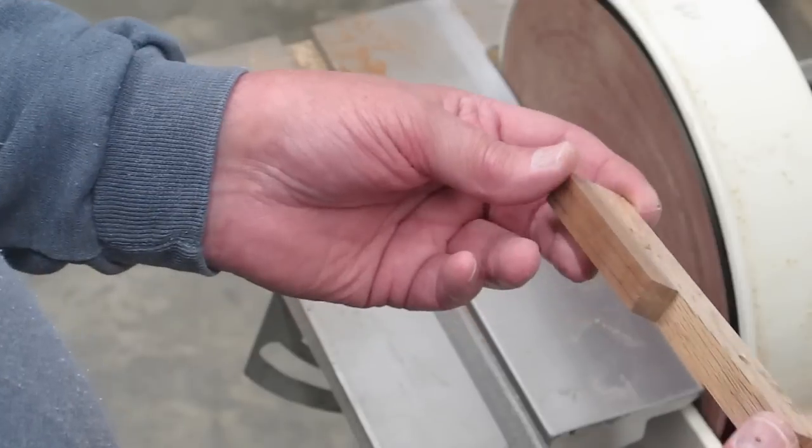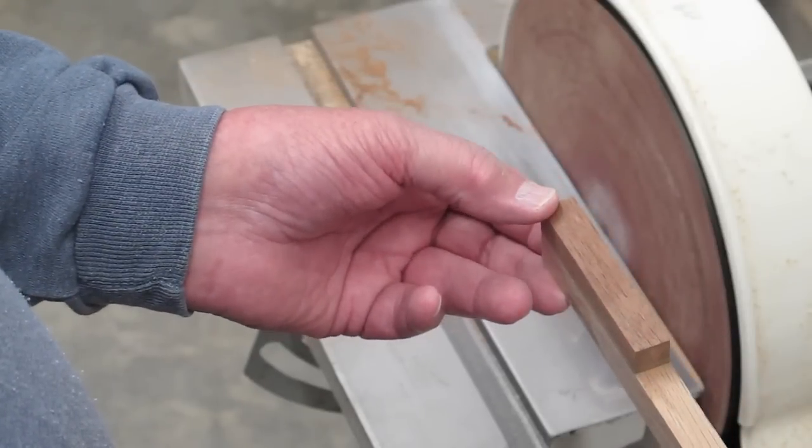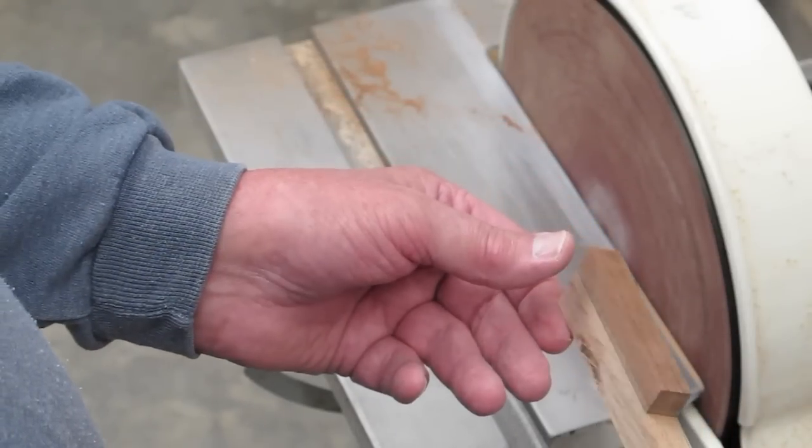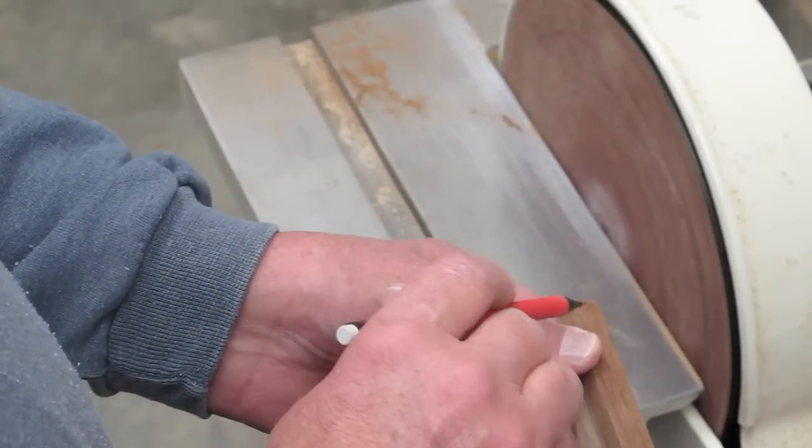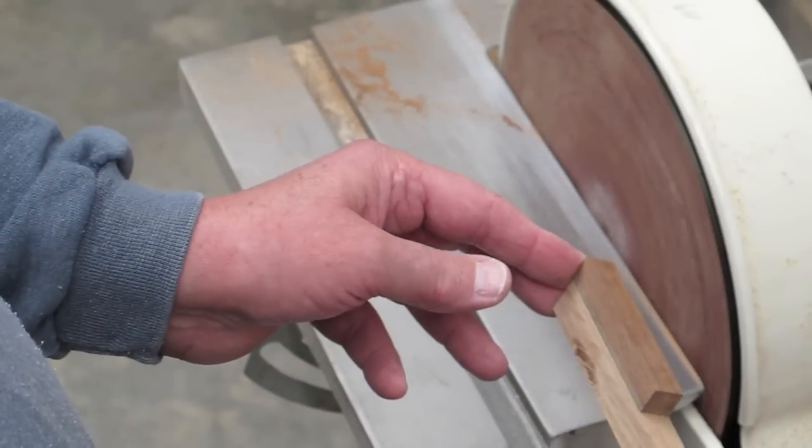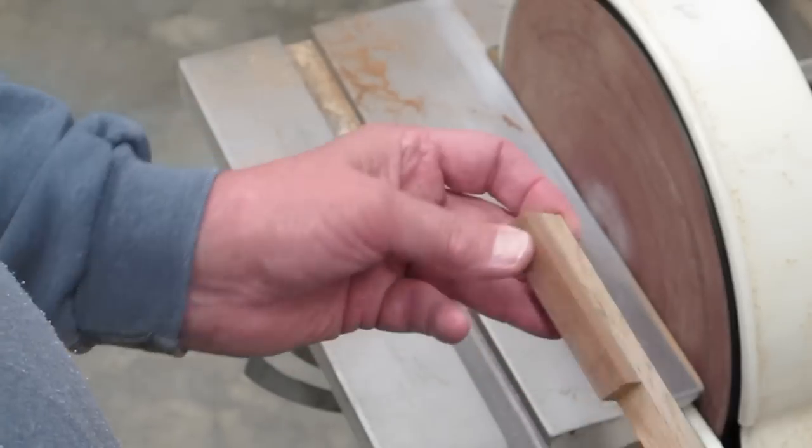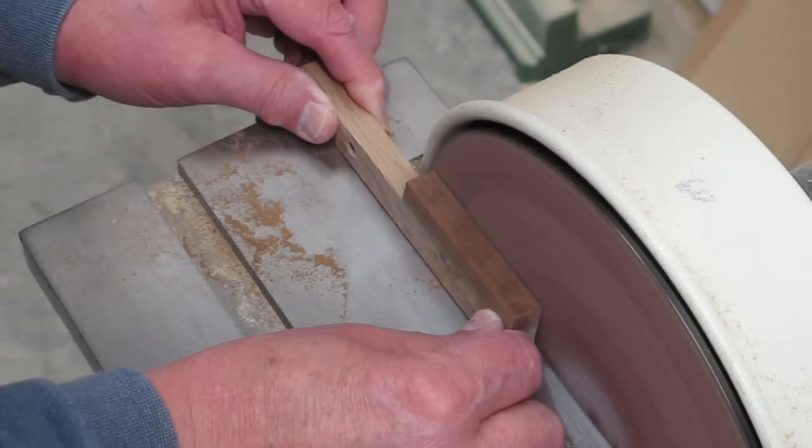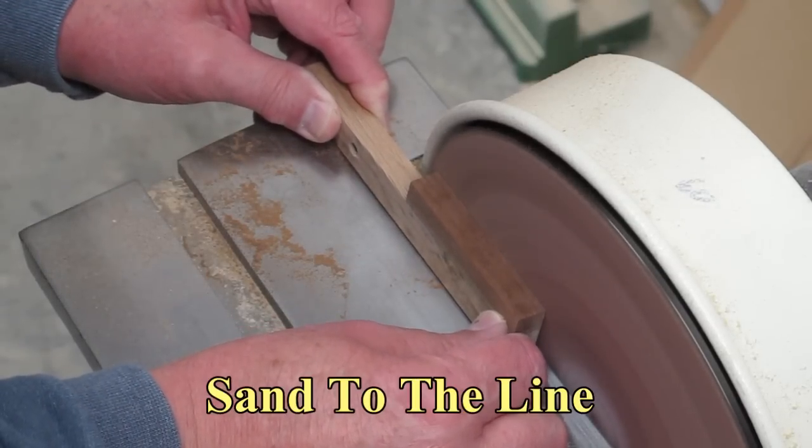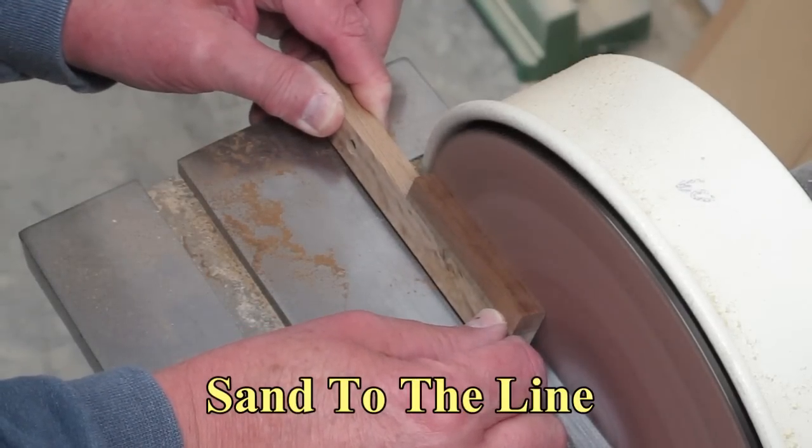I'm going to put that on the disc sander and I'm going to use this as a handle because it gives me control for turning this. I'm going to sand to that line and then rotate that piece until that bevel matches up with that edge.